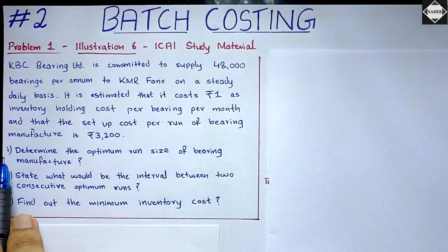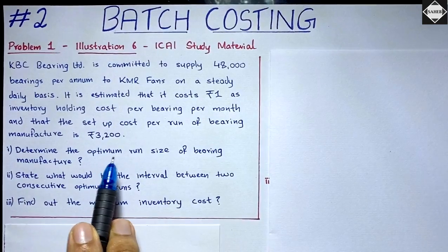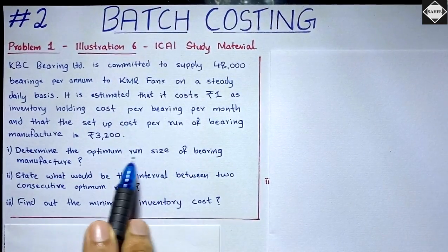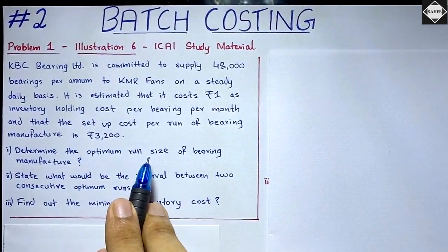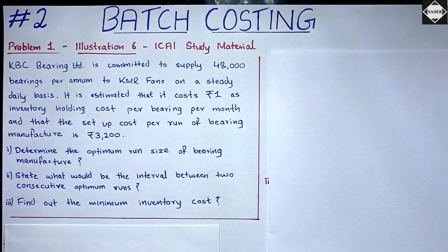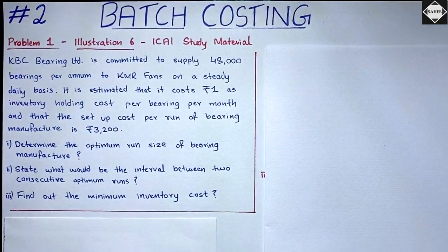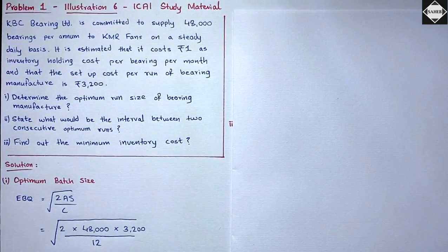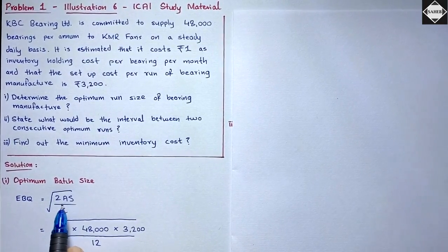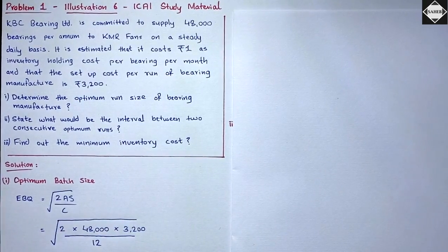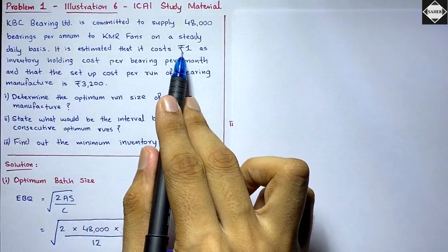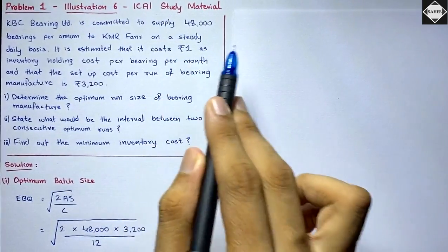The first question asks us to determine the optimum run size of bearing manufacture. Run size means batch size, and the optimum batch size is the Economic Batch Quantity. The EBQ formula is: EBQ = √(2AS / C), where A is the annual demand, S is the setup cost per batch, and C is the carrying cost per unit per annum.